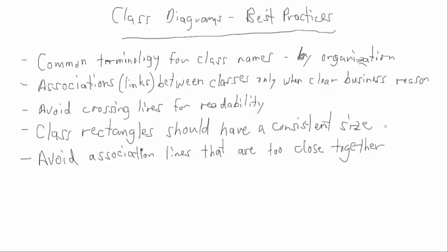Avoiding lines too close together is mainly a readability issue. You want to make sure it's very clear which association line goes from one class to another. In some busy diagrams that can be somewhat difficult to accomplish, but it's still a best practice to strive for. We can use the KISS approach here — keep it as simple as possible while still fully describing what you're trying to describe.